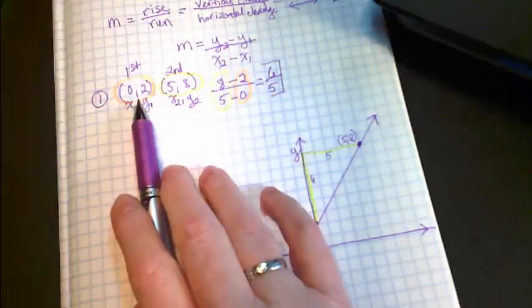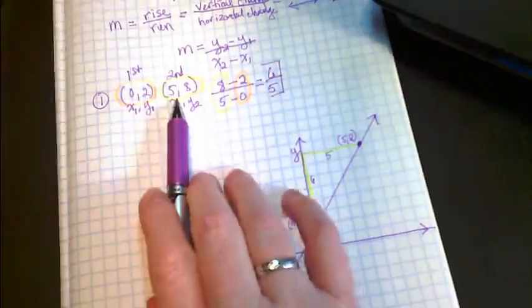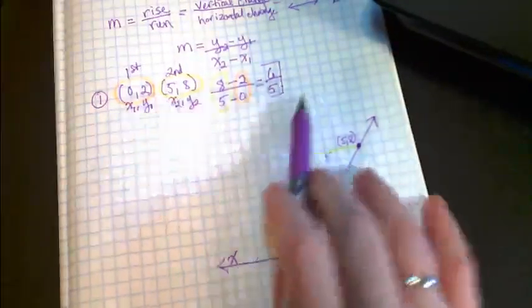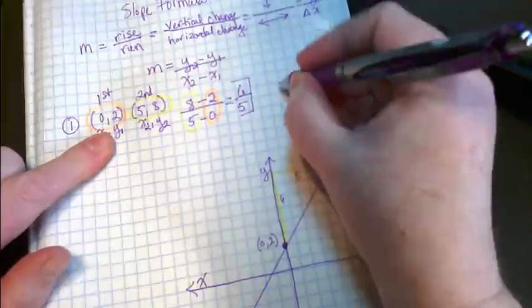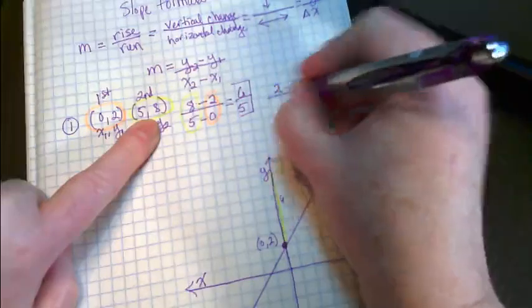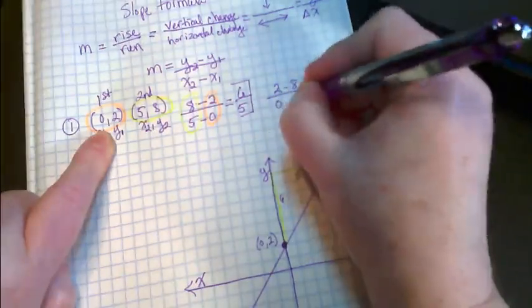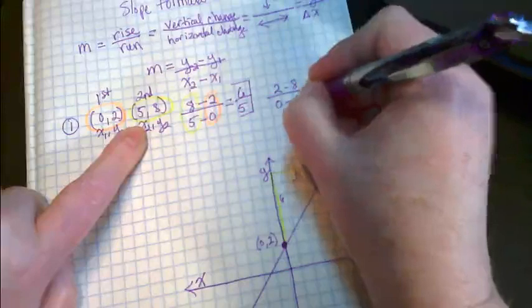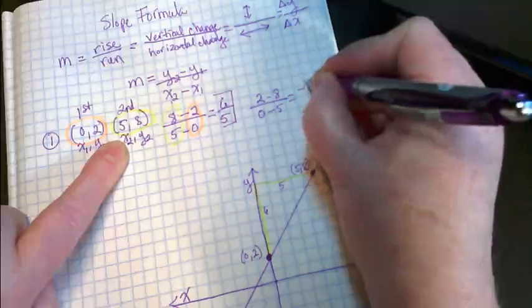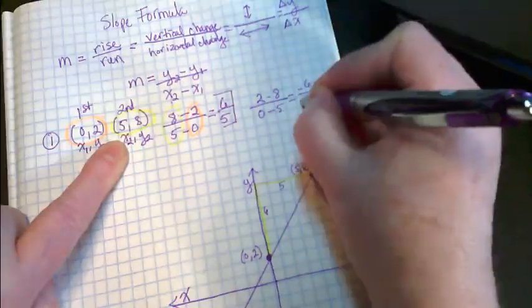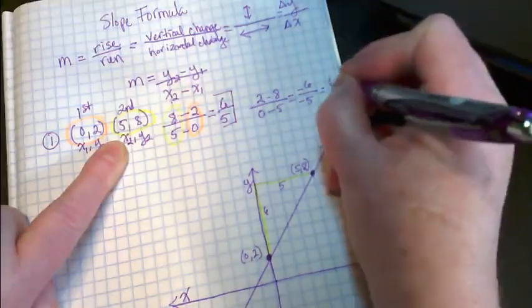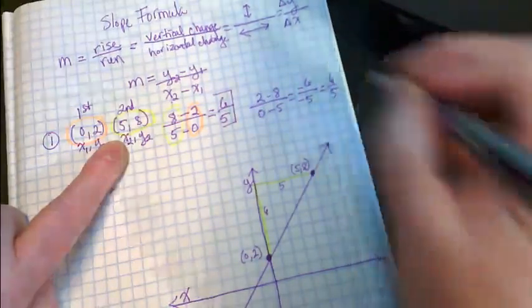And then if we note here, these go here because they were an ordered pair here. So as long as they stay together when you put them in here, it really doesn't matter what order they go in. I'm going to just set this up again and show you that if I put this ordered pair first instead of this one, or if I made this my second pair, if I reverse these, it still works. So I'm going to put 2 minus 8 over 0 minus 5. 2 minus 8 is negative 6. 0 minus 5 is negative 5. Negative divided by negative is positive, and I still end up with 6 over 5 as my slope.